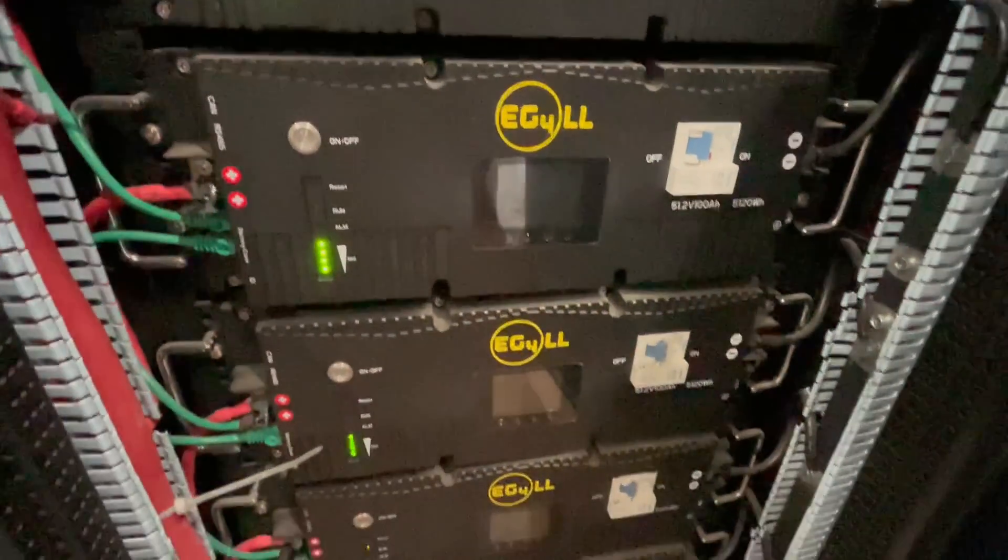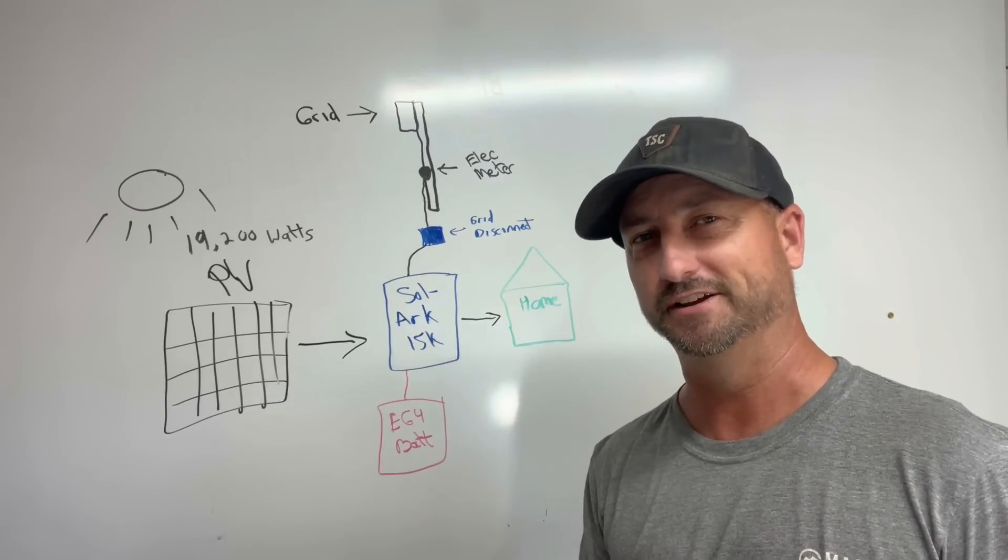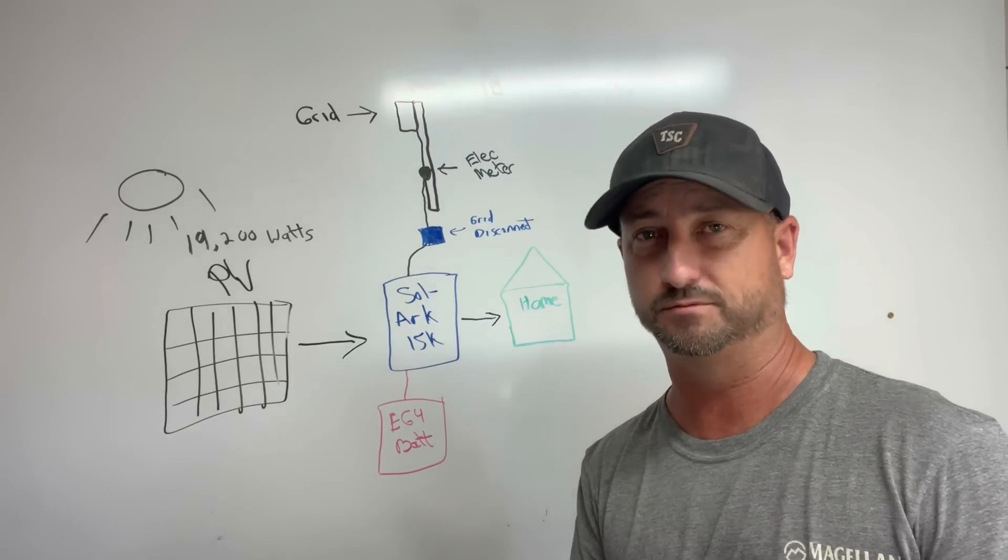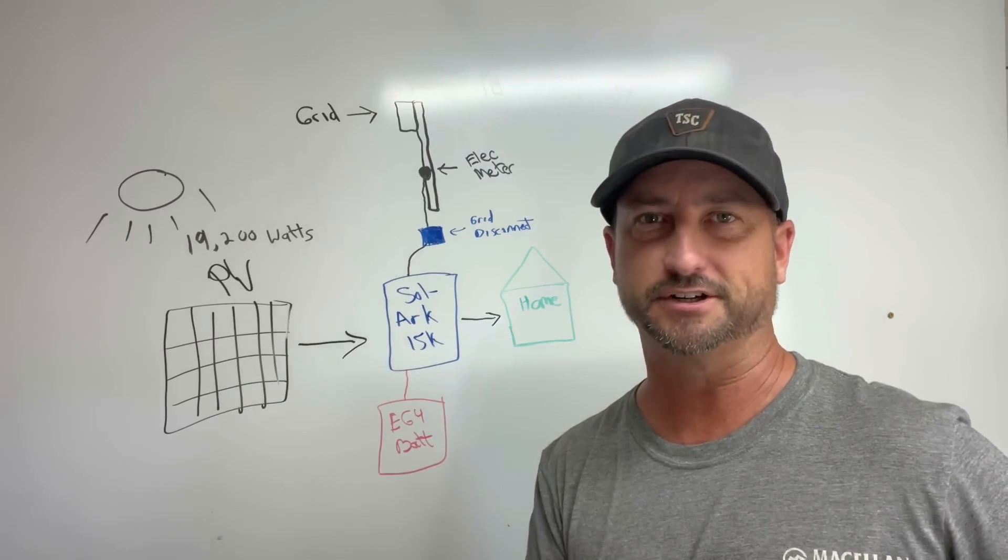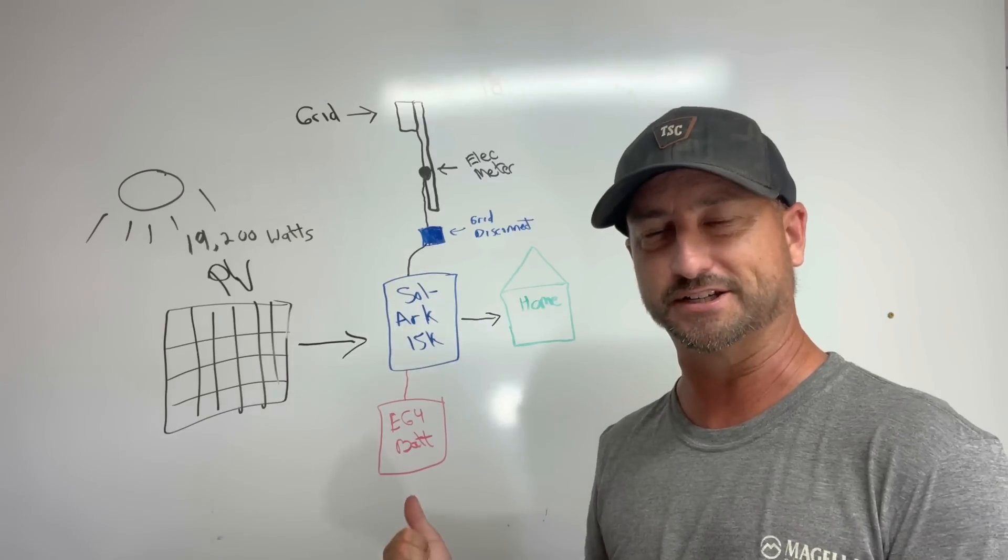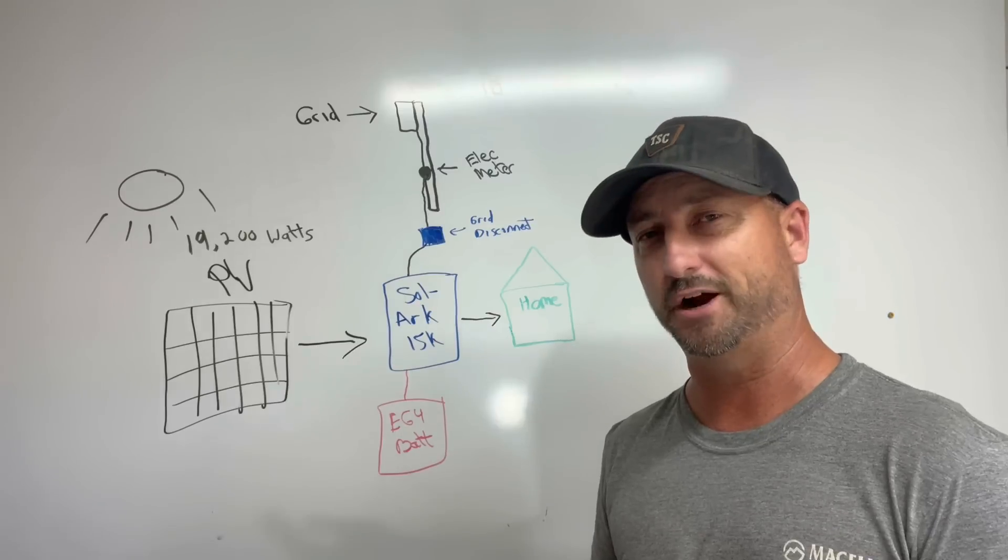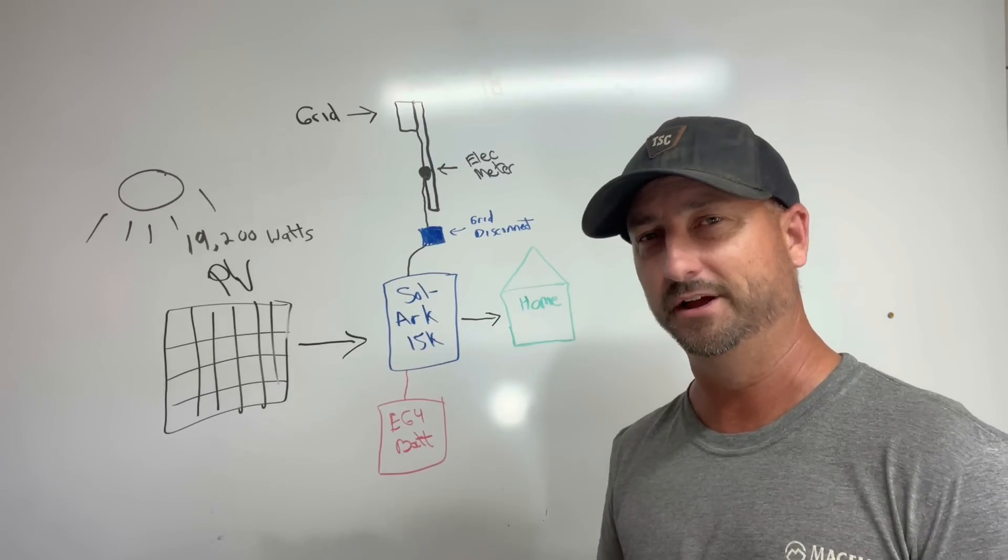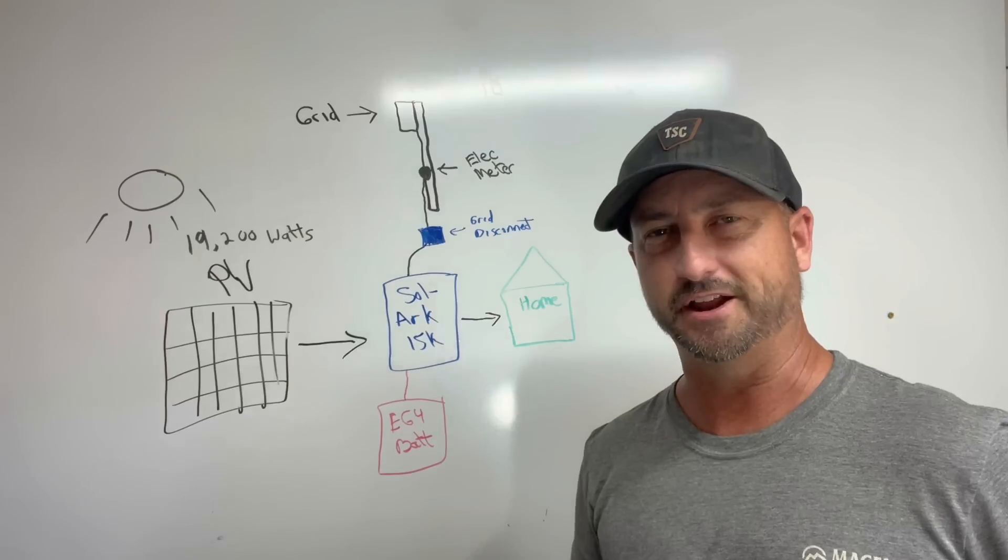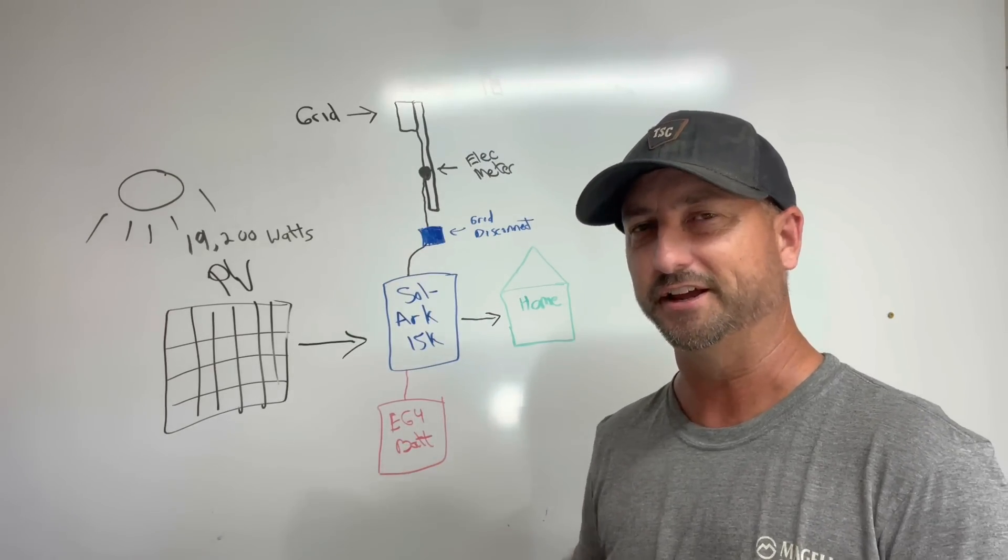So I have it set, which is one great thing about the Solark 15k, is when your batteries get below 20% it will automatically take from the grid only what it needs to run your loads if you tell it to, or you can tell it to charge the batteries if you want to. But I don't want to do that. I want to save as much money as possible to pay back all the money I spent on this system. So once it gets down to 20% it'll automatically go back to grid just to power the loads for a short period of time until the sun comes up the next day and then it all goes back to off grid again.